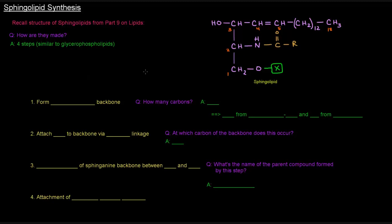So how are these things made? There's four steps, so in that sense, they're similar to the way in which glycerophospholipids are made, because there's also four steps to make those. The first thing that we have to do is we have to form a sphingosine backbone. And how many carbons is that? As you can see from here, there are 18.